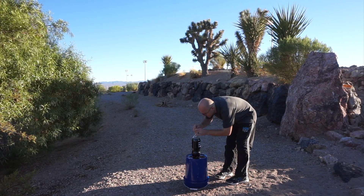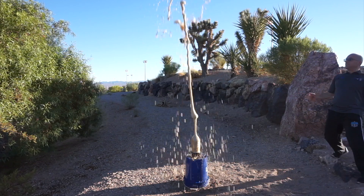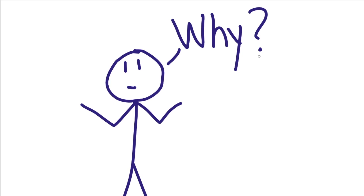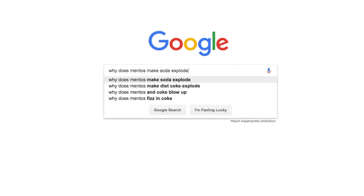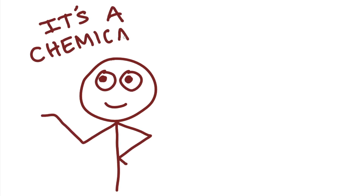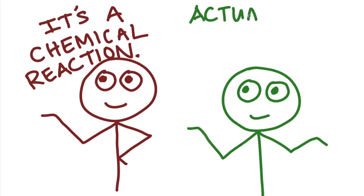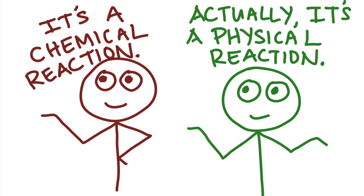Mentos plus soda produces an impressive fountain of bubbles. But why? Let's say you ask your friends and search online, but you come up with conflicting answers. Some sources say that sugar reacts with diet soda to make the fountain — it's a chemical reaction. Other sources say it's a physical reaction caused by the rough texture of the candy.